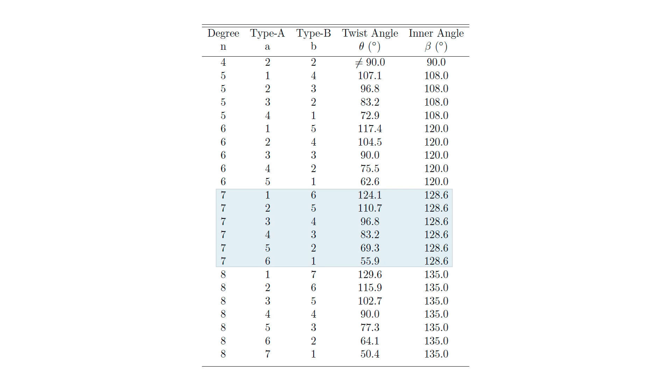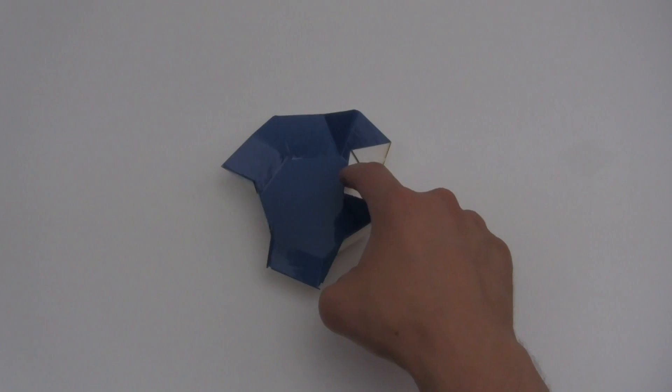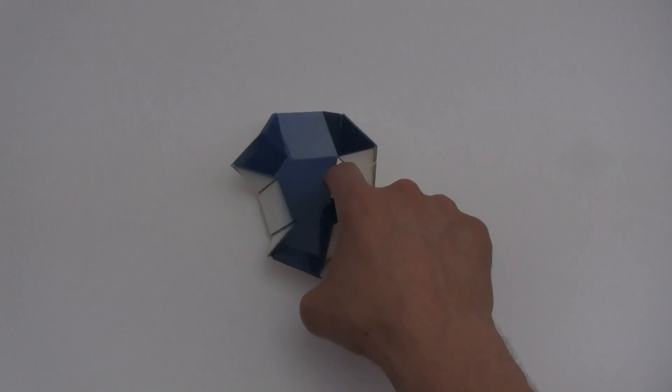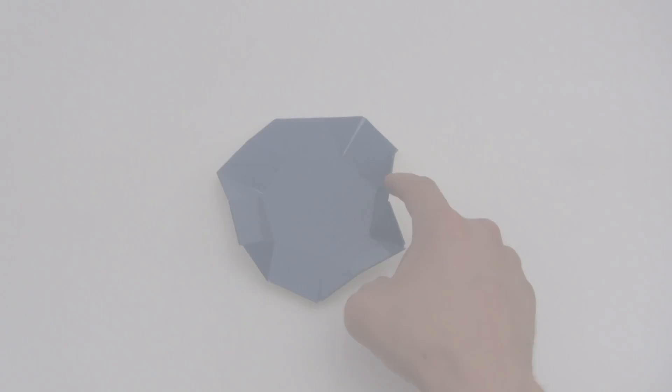For example, for a heptagon there are a number of twist angles that would result in rigidly foldable twists. These are all the possible twist angles that would work to make it rigidly foldable.